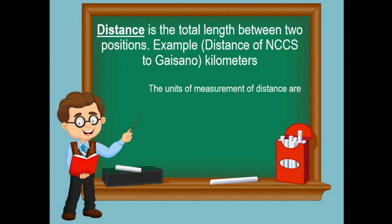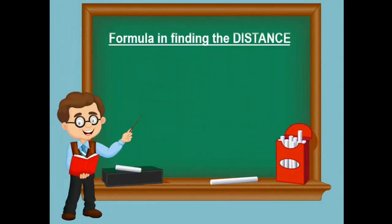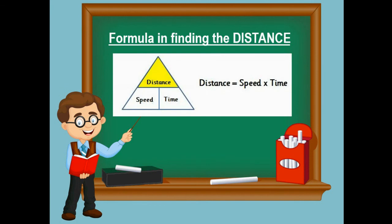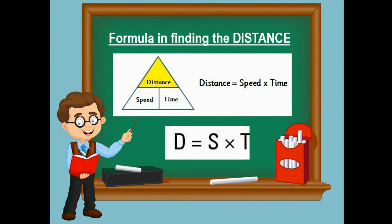The units of measurement of distance are kilometer, meter, centimeter, and millimeter. Using the triangle, the formula for finding distance is: distance is equal to speed times time, or D equals S times T.